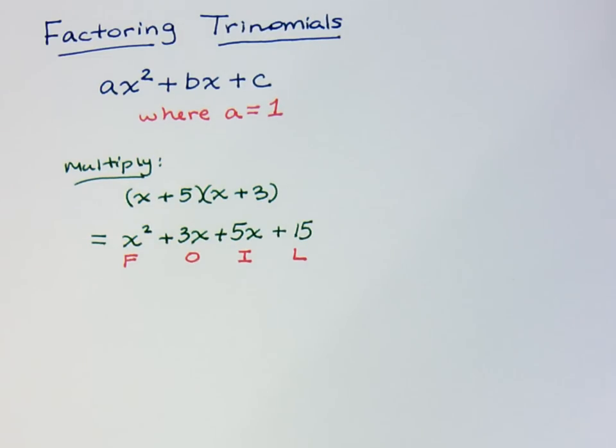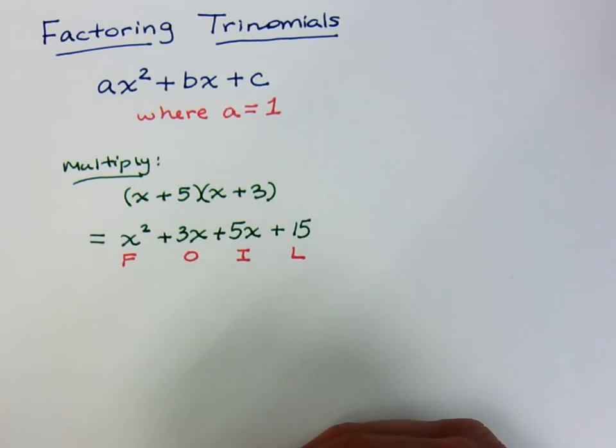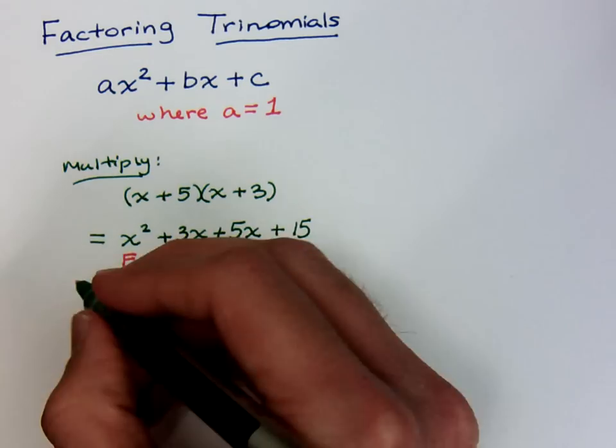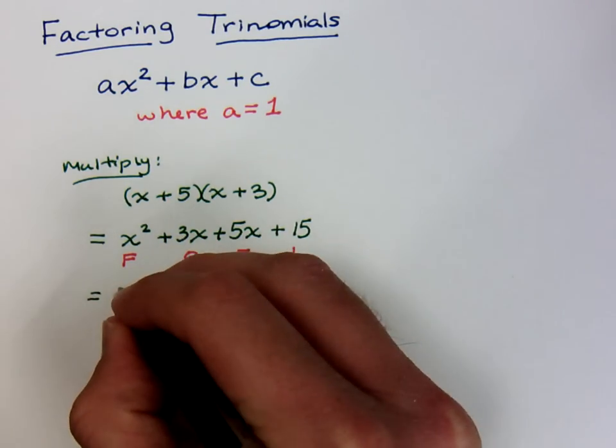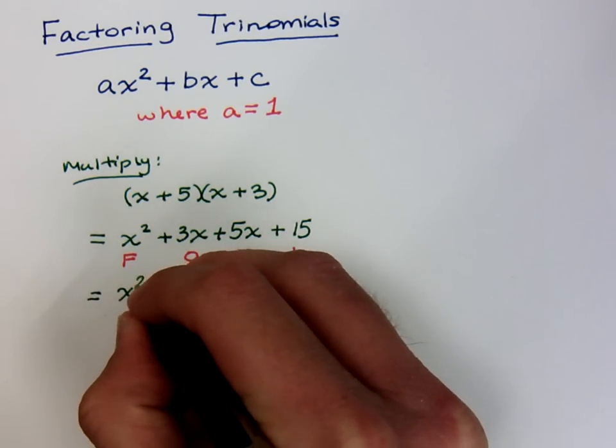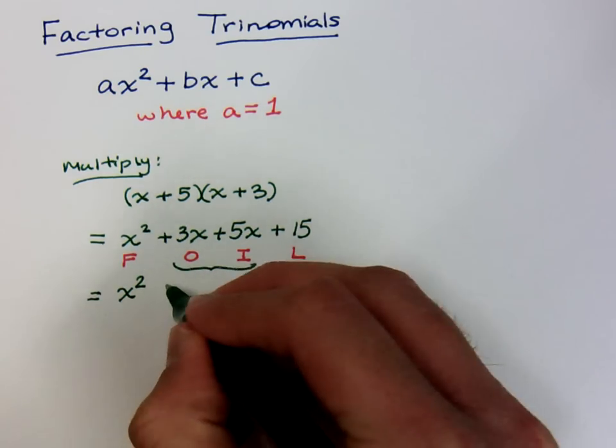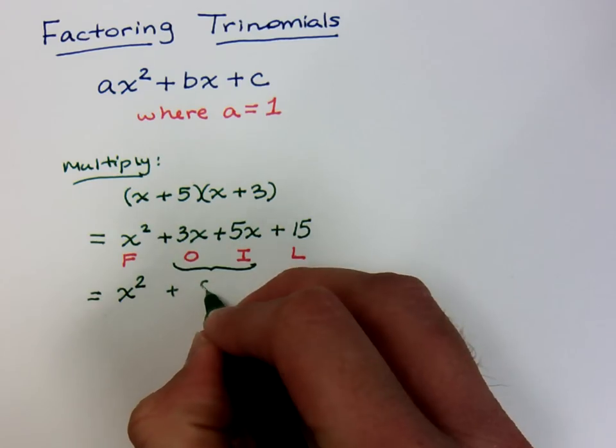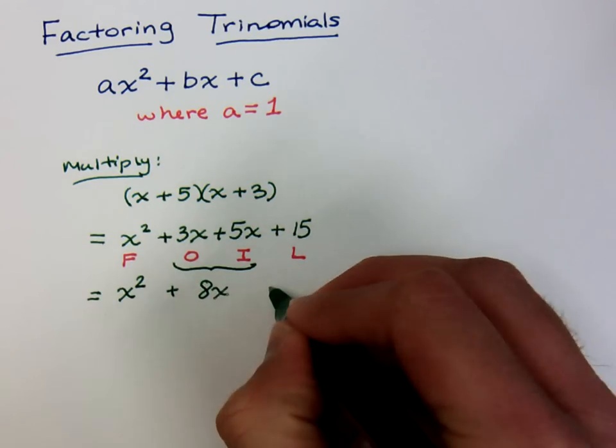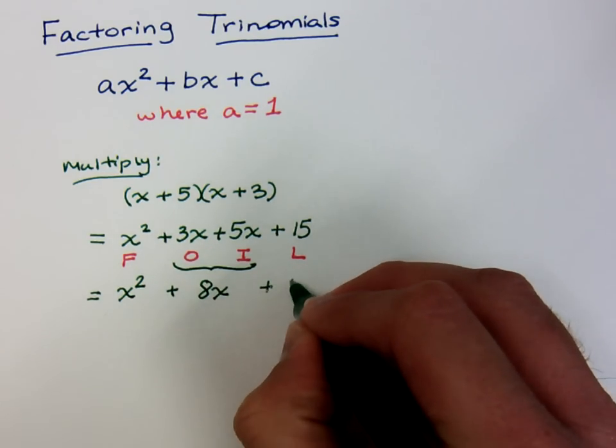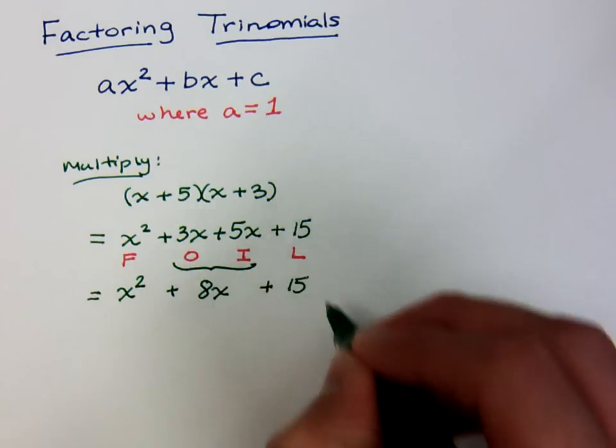This is what we did for the FOIL method. Then we look to see if there was more work that could be done here. Can we combine anything? Can we simplify? When I look at this, your x squared is still x squared, but your outside and inside pieces will combine to give you 8x, and then your last term is still positive 15.